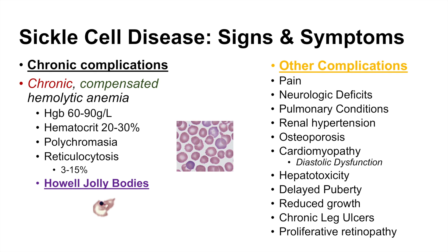Other chronic complications include pain, usually from vaso-occlusion, neurologic deficits, pulmonary conditions due to increased risk of infections, renal hypertension, osteoporosis, cardiomyopathy due to diastolic dysfunction, hepatotoxicity, delayed puberty, reduced growth, chronic leg ulcers, and proliferative retinopathy. Not all of these occur in every patient, but some can have several. Because of pain, individuals may not be as active, leading to decreased bone mineral density and increased risk of osteoporosis. Chronic leg ulcers can also result from these vaso-occlusive properties.